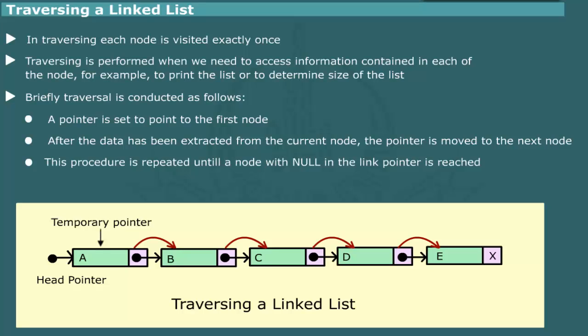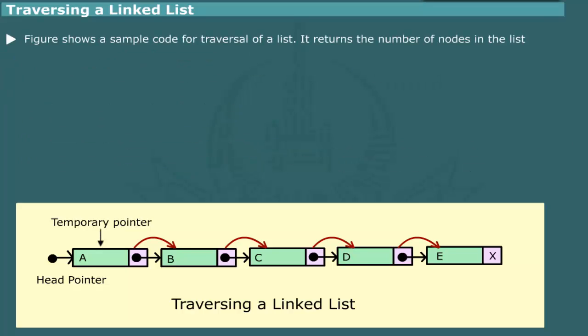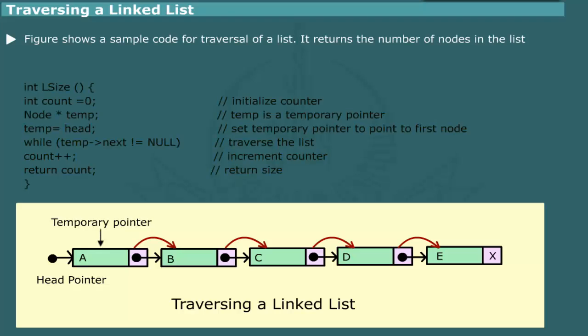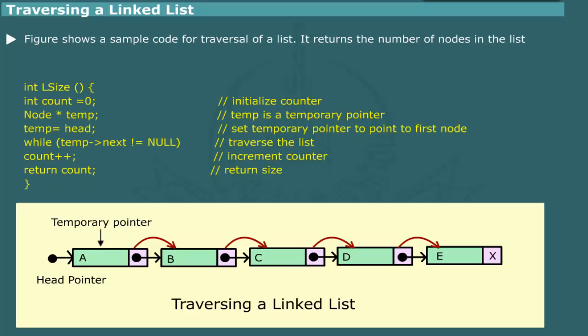We have already seen the use of the traversal procedure in performing insertion and deletion. Figure shows another example of a traversal algorithm. The code implements a method, lsize, which returns the size of a list with the pointer head pointing to the front element. Briefly, these steps are involved: a counter is initialized to zero; a node pointer TEMP is used to point to the first node; a loop is set up to scan the list; in each cycle, the counter is incremented by one; and at the end, the function returns the count value.